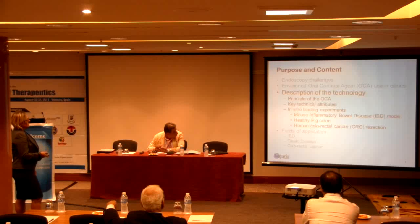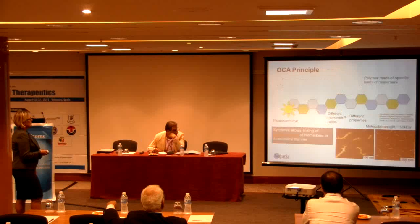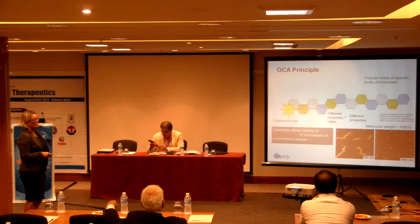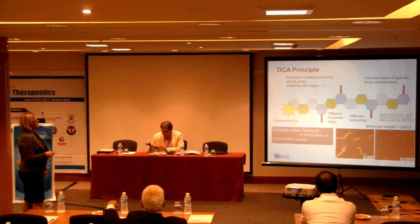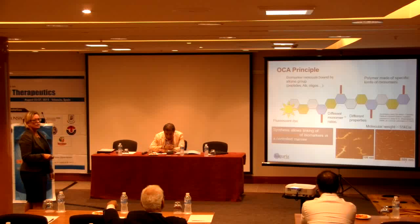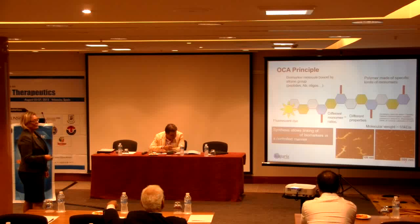Now these slides are aimed at describing this technology, where we stand and where we are. The principle is to have a big carrier which is a polymer — an assembly of different monomers with specific physical and biochemical properties. This carrier allows the binding of biomarker molecules. It is quite flexible and robust in the sense that it allows binding of peptides, small molecules, big molecules such as antibodies, and obviously a dye is also required — it could be a fluorescent dye.